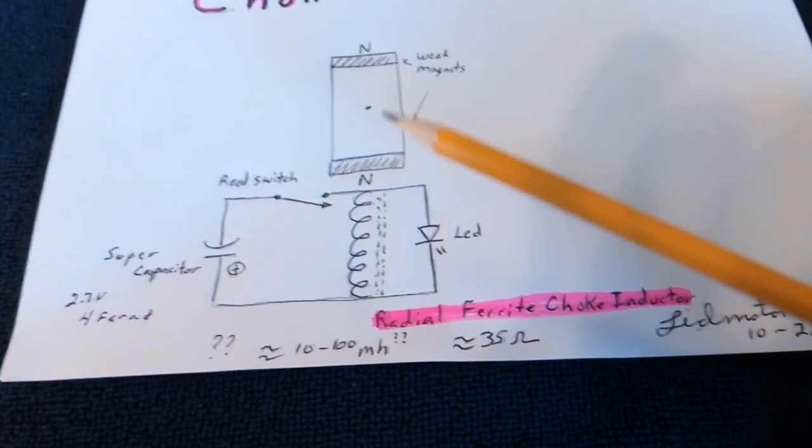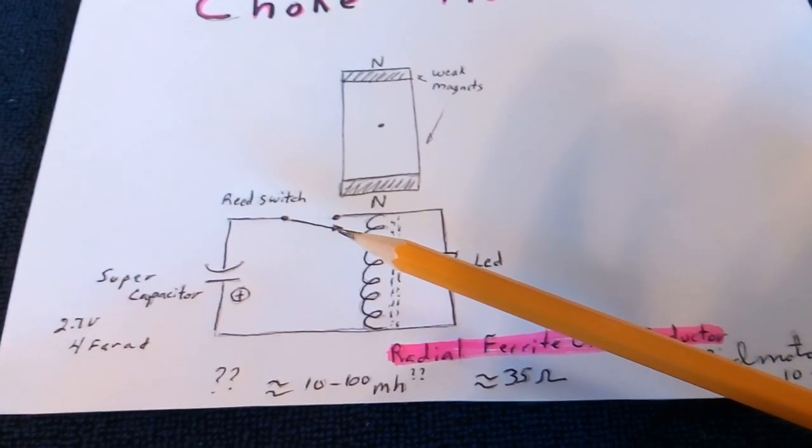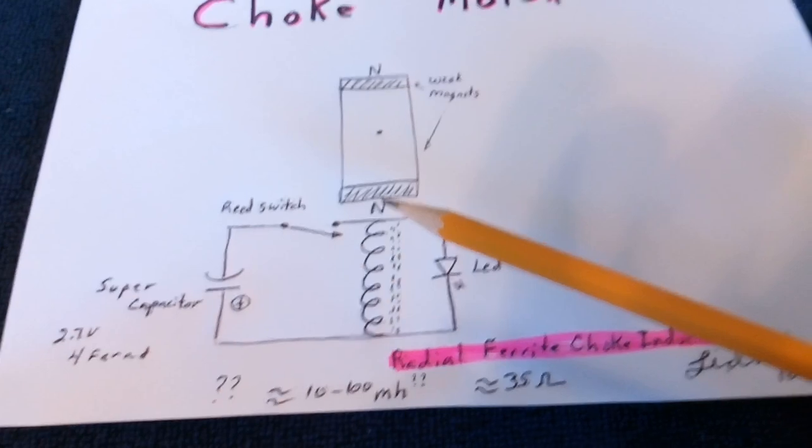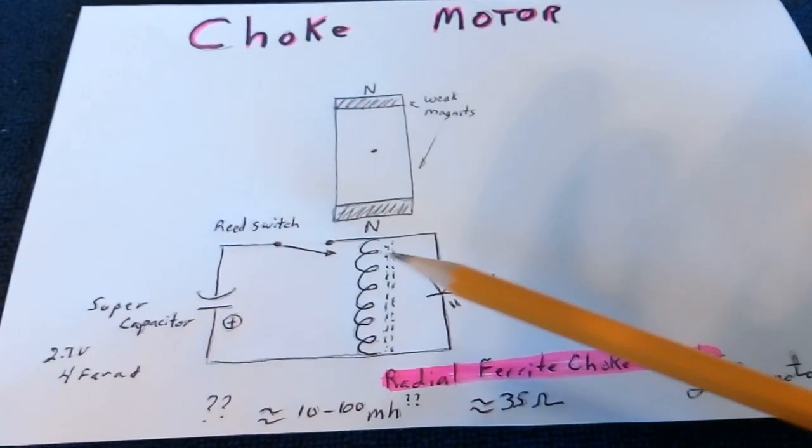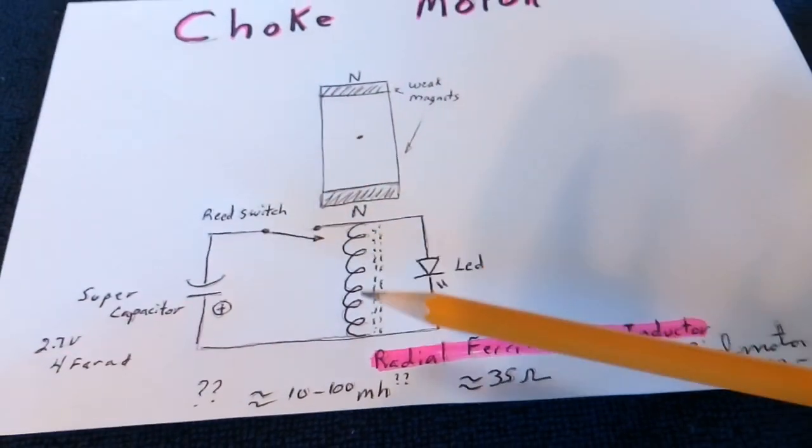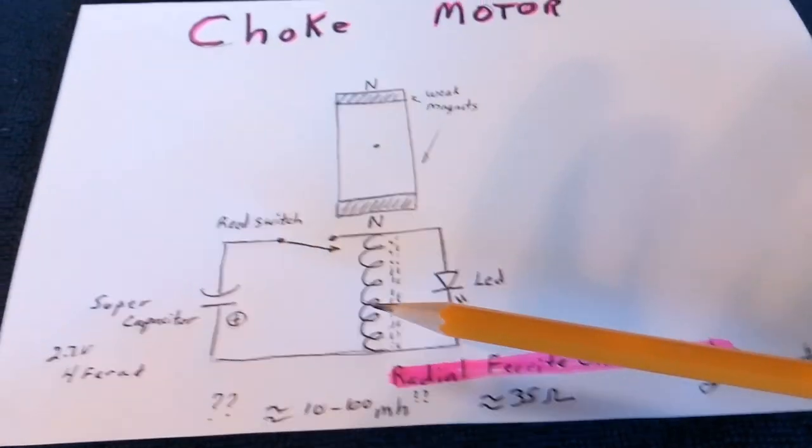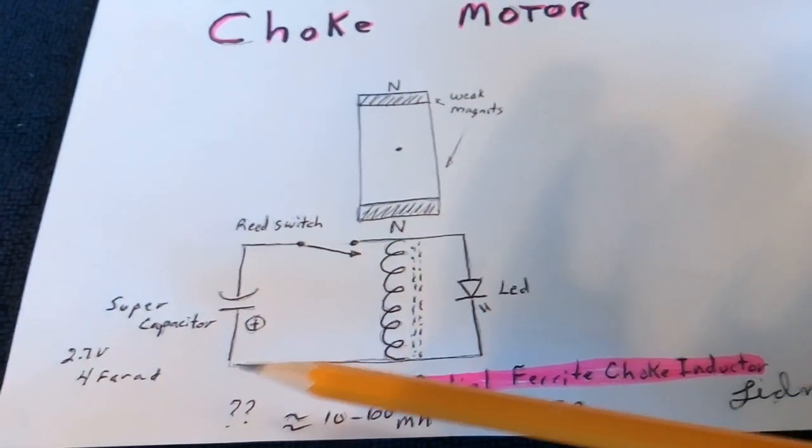As the rotor goes around here, these are weak magnets. It's enough to trigger that reed switch which energizes the circuit and pushes the magnet away. Then the magnet goes by, the reed switch opens up, and the energy in that inductor, that coil with the ferrite core, has no place to go except this way.